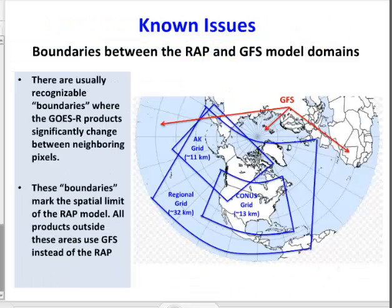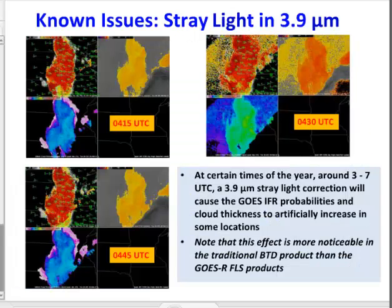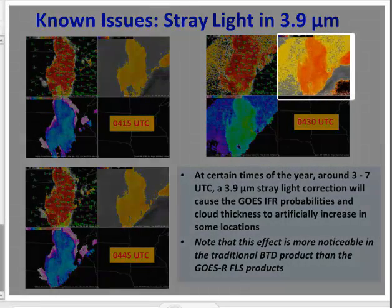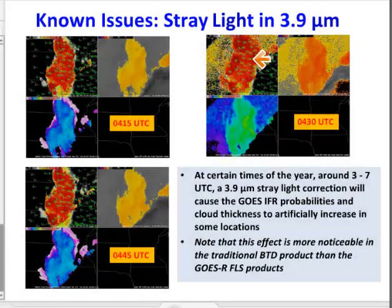Model data are provided by the Rapid Refresh, with domains and resolutions noted on this slide. GFS data are used outside of North America. Stray light issues occur around the equinoxes. They appear in brightness temperature difference products, but they also leak into the IFR probability field and the GOES-R Cloud Thickness field.